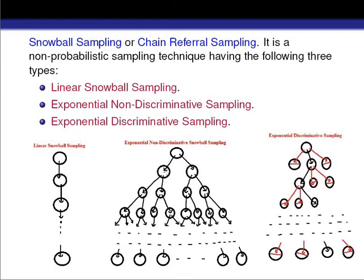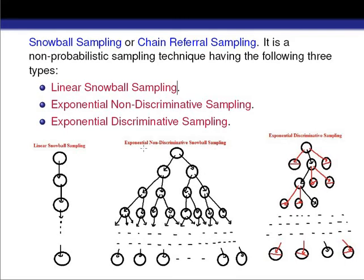We continue this process — visiting all referred persons and collecting information — until our sample size is complete. You can see the chain is expanding very fast: one in step one, three in step two, seven in step three. This is 'non-discriminative' because chain by chain we are getting more and more information from the study objects. This type is known as exponential non-discriminative snowball sampling.